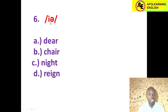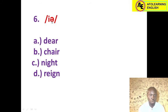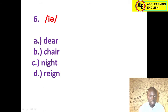Number six: the diphthong /ɪə/, the schwa-ending diphthong. The schwa /ə/ is the most frequently occurring vowel sound in English and is also a weak vowel. Here we are looking for /ɪə/. Option A 'deer' — yes, correct answer. Don't confuse /ɪə/ with /eə/. Option B 'chair' — that's /eə/, no. Option C 'night' — /aɪ/, no. Option D 'rain' — /eɪ/, no. The correct answer is deer.